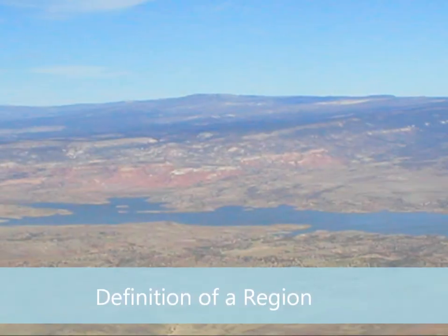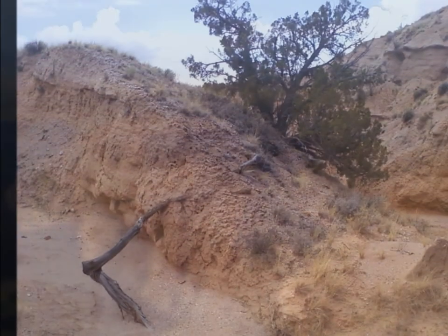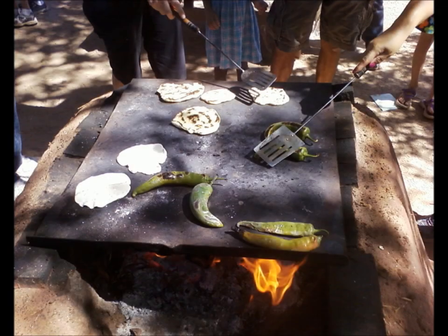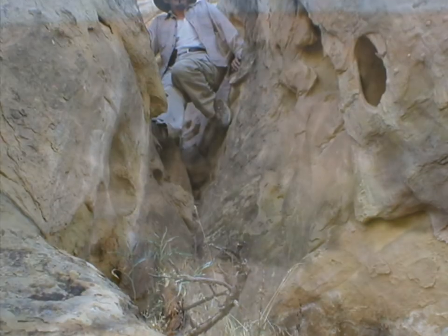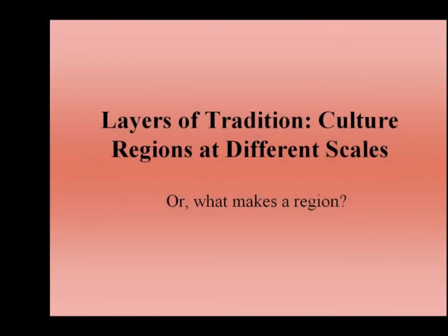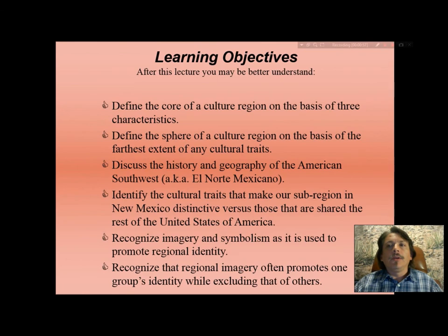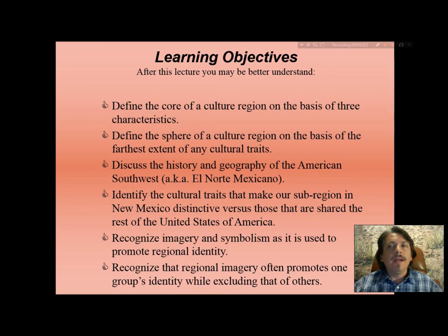A region is an area of geographic space with a set of unifying characteristics that set it apart as unique and different from its surrounding areas. We begin by discussing cultural regions at different scales using three concepts. You will learn to define the core of a cultural region on the basis of three characteristics, and also be able to see a sphere of that cultural region, which is the furthest extent of those cultural traits.